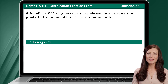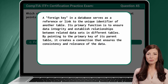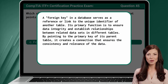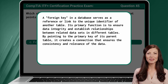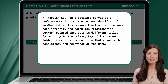The answer is C, Foreign Key. A foreign key in a database serves as a reference or link to the unique identifier of another table. Its primary function is to ensure data integrity and establish relationships between related data sets in different tables. By pointing to the primary key of its parent table, it creates a connection that ensures the consistency and relevance of the data.